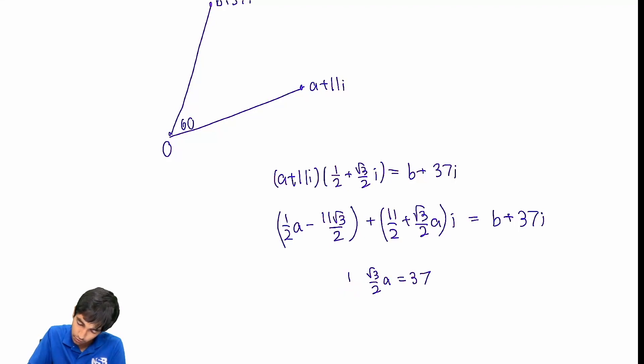And now guess what? Two variables, two equations, because we can compare the real parts and the imaginary parts. So what's our first equation? 11 over 2 plus root 3 over 2a is 37. If we subtract 11 over 2 from both sides, we get 63 over 2. So a is 21 root 3. Now let's solve for b. We just do 1 half times 21 root 3 minus 11 root 3 by 2. That's just 5 root 3.